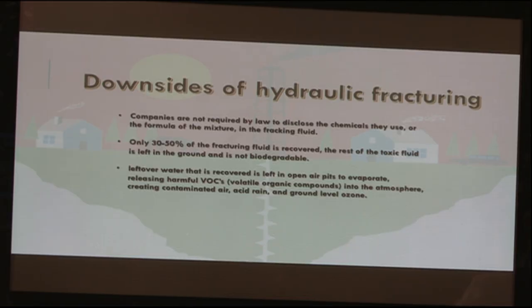There are also downsides to hydraulic fracturing. Companies are not required by law to disclose the chemicals used in fracking fluid. This is a big issue because up to 600 chemicals are used, including known carcinogens and toxins such as lead, uranium, mercury, ethylene glycol, radium, methanol, hydrochloric acid, and formaldehyde. This makes it very difficult for local residents or first responders to prepare for an accident, and difficult for scientists to gauge the threat posed by these chemicals.